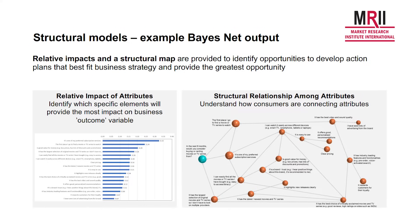What's new is this network map. Our outcome variable here is consideration for buying or renting movies or TV programs — so this is for a TV service provider. The orange bubbles are the attributes, and you can see which ones feed directly into the outcome measure and which feed indirectly by driving other attributes. You can also see the significant interrelationships between them, and how a one-point increase in each feature will increase the outcome variable.